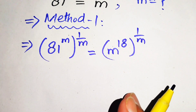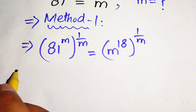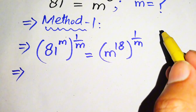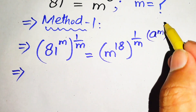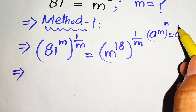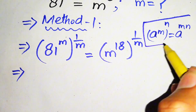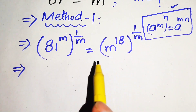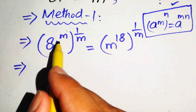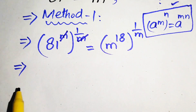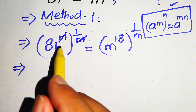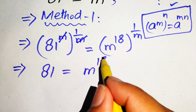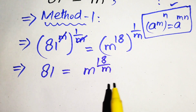We take the mth root on both sides and use the exponential law: a to the power of m, to the power of n equals a to the power of m times n. Applying this law, the m in the exponent is cancelled, and we get 81 equals m to the power of 18 divided by m.